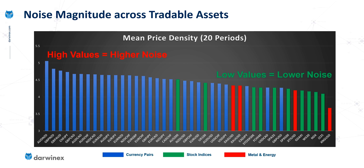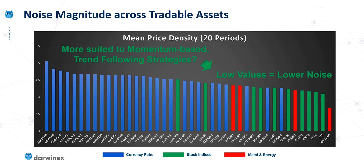In this analysis, Aussie Kiwi is the most noisy, and natural gas over on the right is the least noisy. Let's recap on our hypothesis: with low values of noise, these assets are more suitable to momentum-based trend-following strategies, because we're less likely to get whipsawed out of those trades.